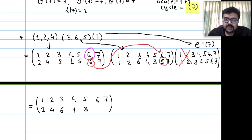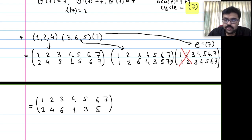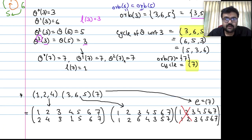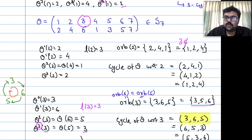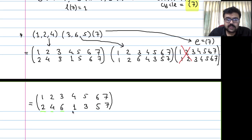Continuing: 4 goes to 1 in first, 1 goes to 1 in second, so 4 goes to 1. And 7 goes to 7 in both. So the product gives us: 1→2, 2→4, 3→6, 4→1, 5→3, 6→5, 7→7, which is exactly theta. So multiplying the cycles of theta gives back theta.